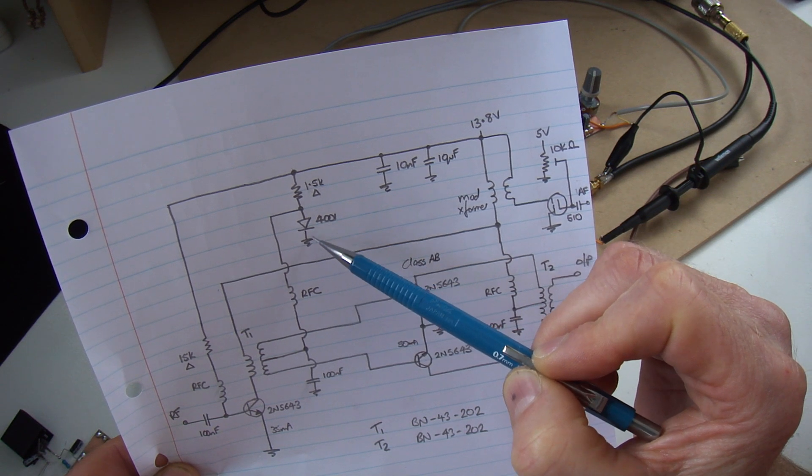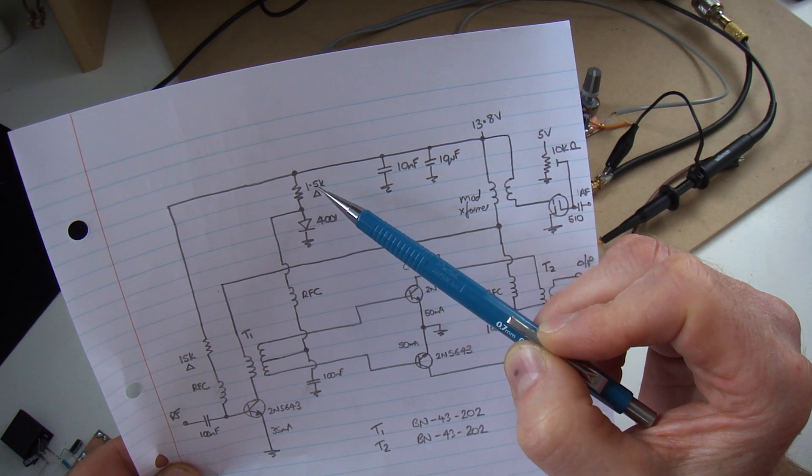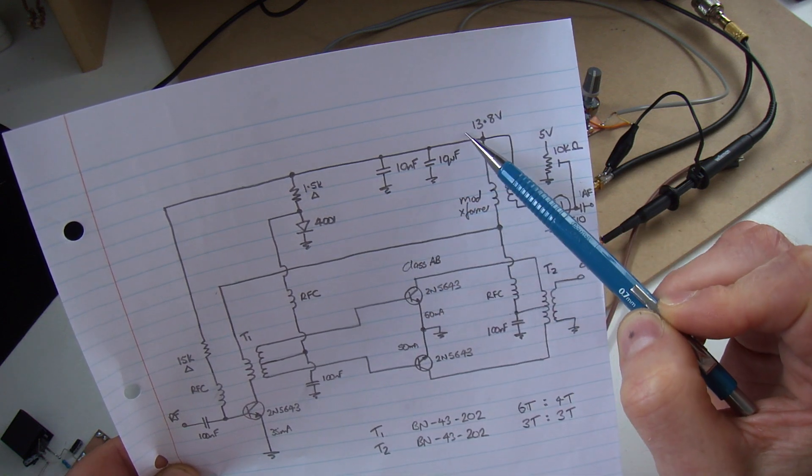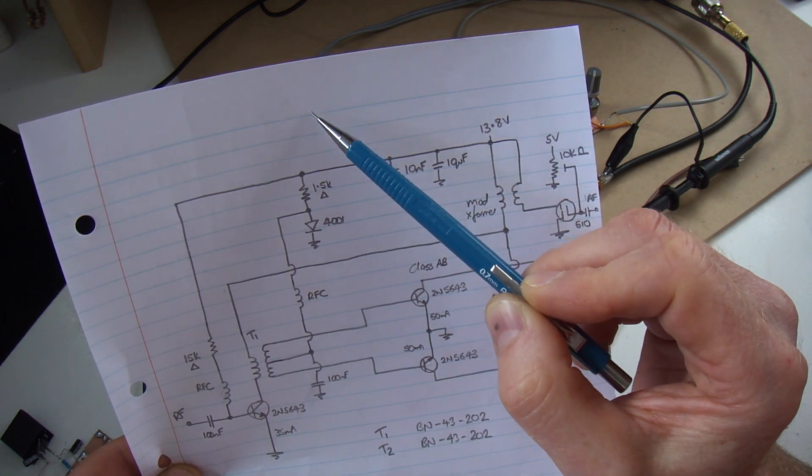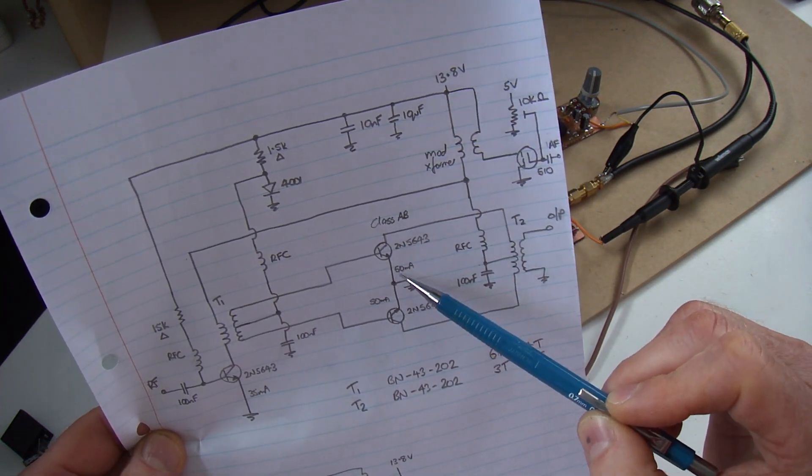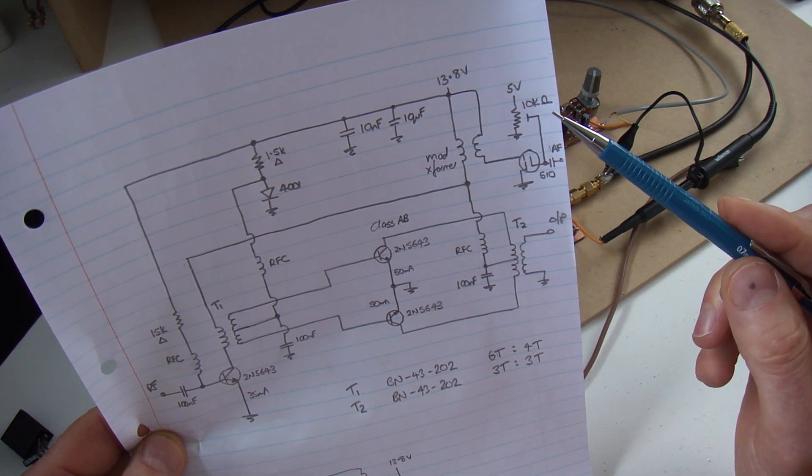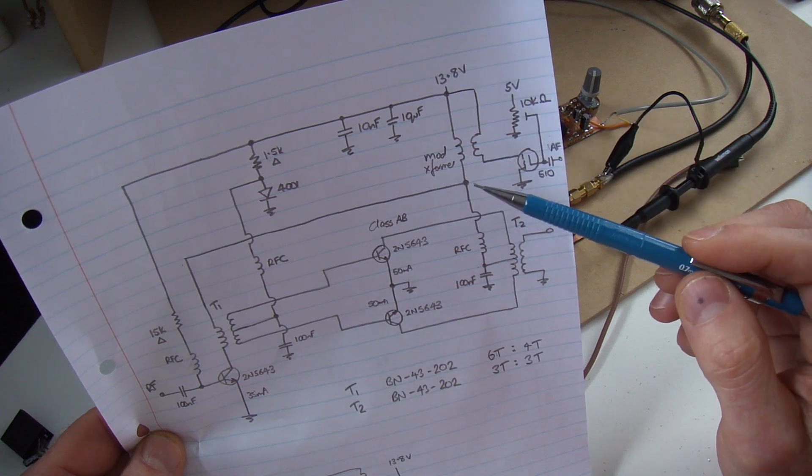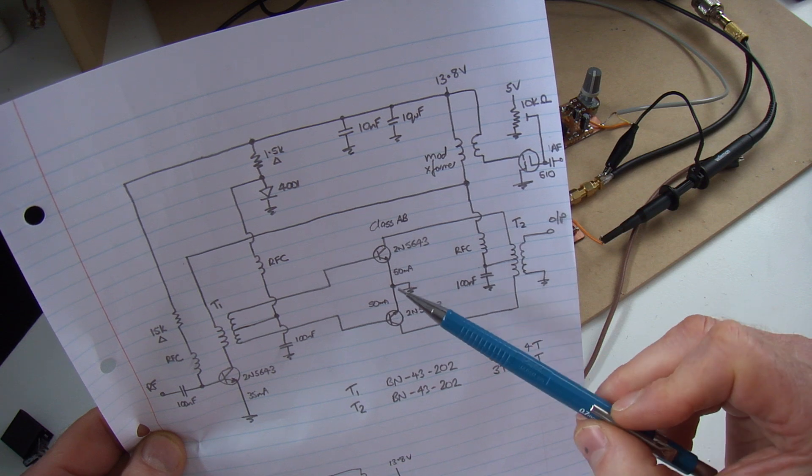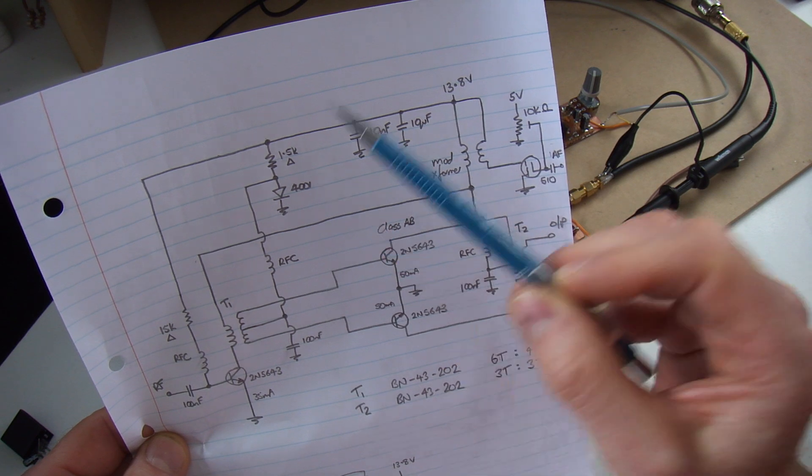1N4001 power diode there, and I varied the resistor that feeds the anode through to the 13.8 volts, starting high and then coming down until I got a quiescent current of 50 milliamps per device. So a total then of 100 milliamps through the modulation transformer in a quiescent condition. And that turned out to be 1.5k ohms.